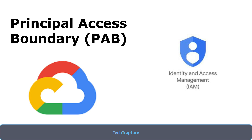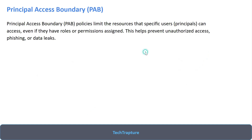Let's first understand what Principal Access Boundaries are. The Principal Access Boundary policies limit the resources that specific users can access, even if they have roles or permissions assigned to them. This helps prevent unauthorized access, phishing, or data leaks.